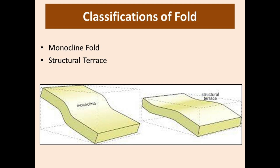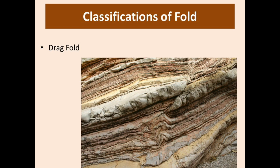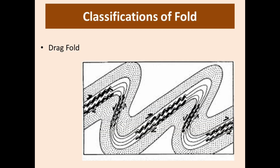Drag folds are found when competent beds slide past incompetent beds. These folds indicate the direction of relative movement of rocks. A real-life example is a biscuit: the cream between the biscuits represents incompetent strata, and the biscuits are competent strata. When you press the biscuit, the cream shows drag folding.